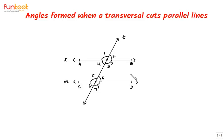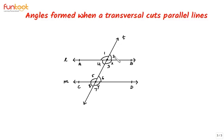Let's learn about the angles formed when a transversal cuts two lines. Here L and M is the pair of lines and T is the transversal. Transversal intersects line L at point X and intersects line M at point Y.